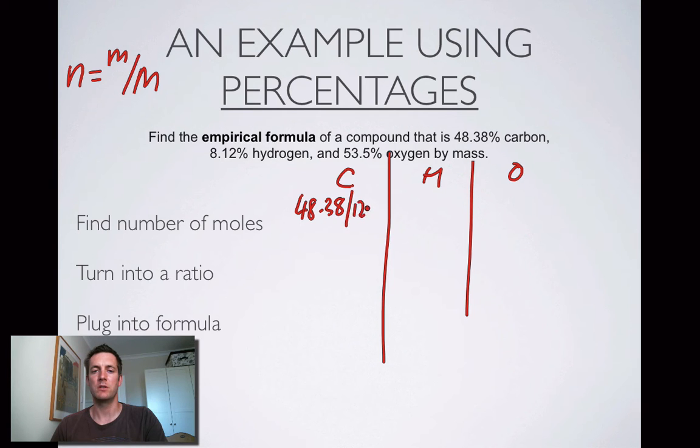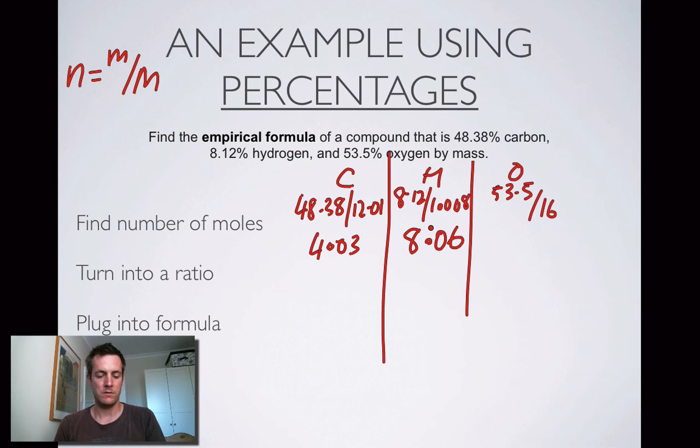48.38 divided by 12.01 for carbon. 8.12 divided by 1.008 for hydrogen. And 53.5 divided by 16 for oxygen. Let's just quickly write those out. 48.38 divided by 12.01. This is 4.03. 8.12 divided by 1.008 is 8.06. And 53.5 divided by 16 equals 3.34.